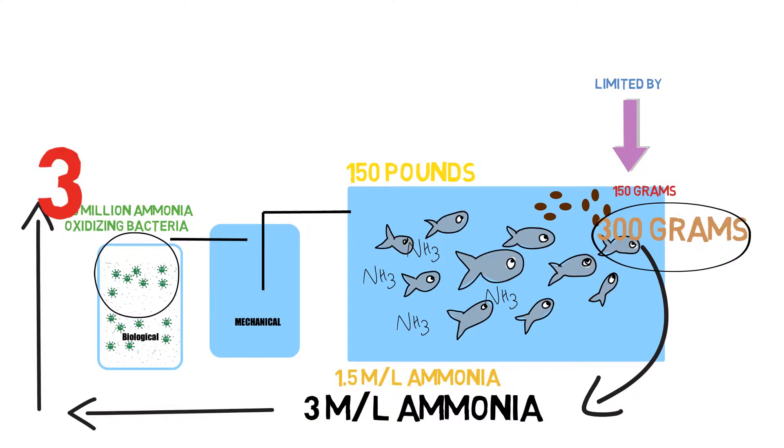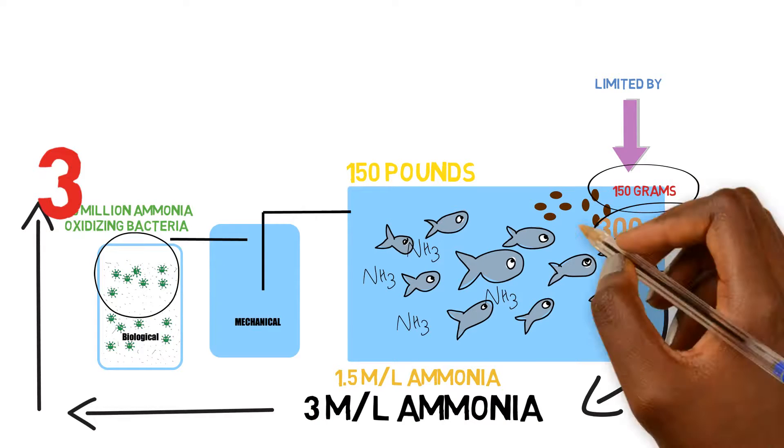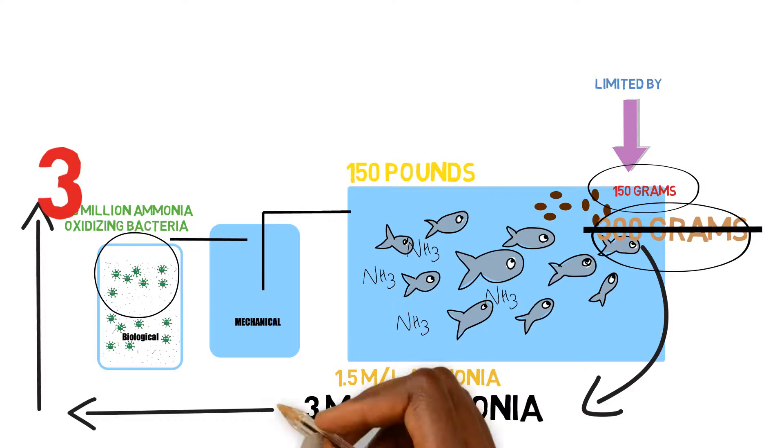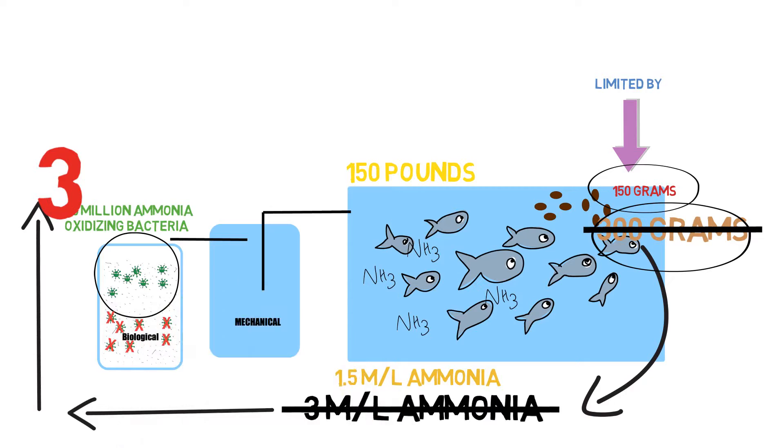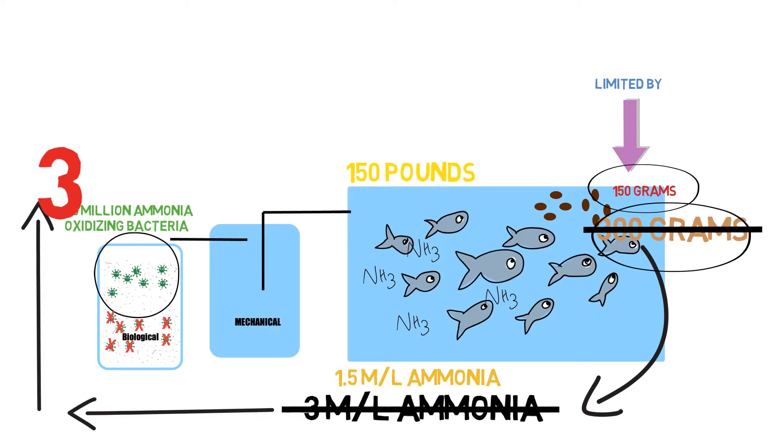Now, if we drop back down to 150 grams of feed, then half the colony is going to have to bite the dust. Half the colony is gone. So the relationship is there, the amount of ammonia to the amount of bacteria. You can only have as much bacteria as you have ammonia that's able to sustain them.